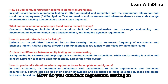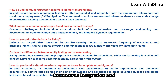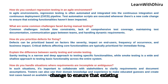How do you conduct regression testing in an Agile environment? In Agile environments, regression testing is often automated and integrated into the Continuous Integration and Continuous Deployment (CI/CD) pipeline. Test automation scripts are executed whenever there's a new code change to ensure that existing functionalities haven't been impacted.